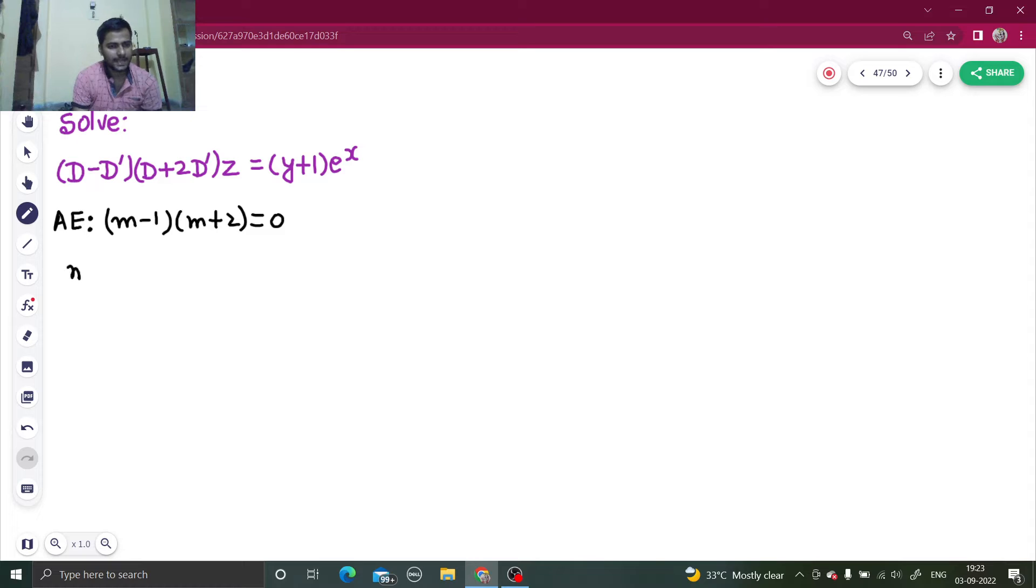You will get m1 as 1 and your m2 as minus 2. Once you get this, because they are distinct, you can write your complementary function as f1(y plus x) plus f2(y minus 2x). Fine?